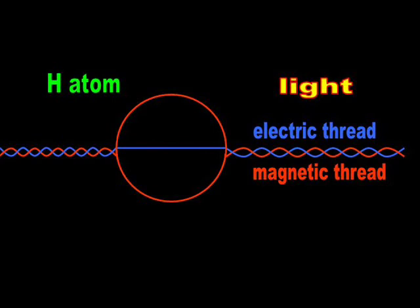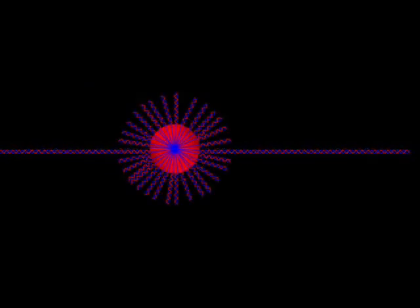The magnetic thread, meanwhile, curves around and forms the electron shell. The electric threads from every atom in the universe converge upon a given atom, forming an urchin-like star at its center.